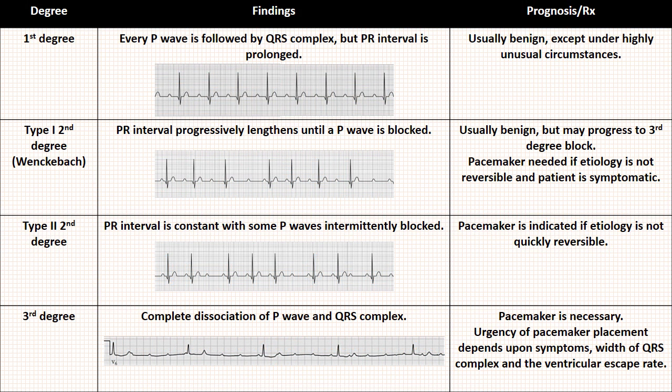Here is a summary. In 1st degree AV block, every P wave is followed by a QRS complex but the PR interval is constantly prolonged — it is usually a benign condition. In Type 1 2nd degree heart block, the PR interval progressively lengthens until there is a block; it is usually benign but may progress to 3rd degree AV block. A pacemaker is needed if the etiology is not reversible or the patient is symptomatic. In Type 2 2nd degree block, the PR interval is constant with some P waves blocked intermittently; a pacemaker is indicated if the etiology is not quickly reversible. In 3rd degree AV block there is complete dissociation of P waves and QRS complexes, and a pacemaker is necessary. The urgency of pacemaker placement depends upon symptoms, width of QRS complex, and the ventricular escape rate.